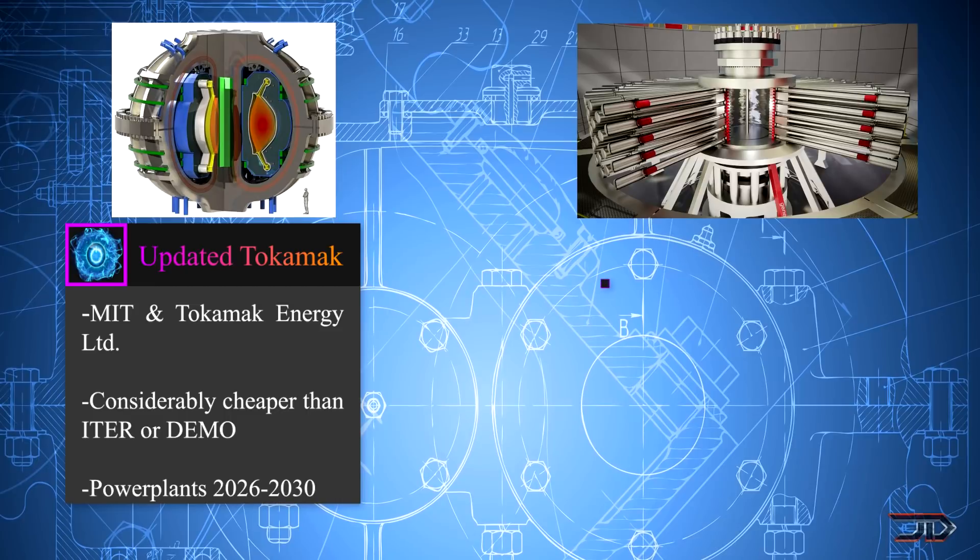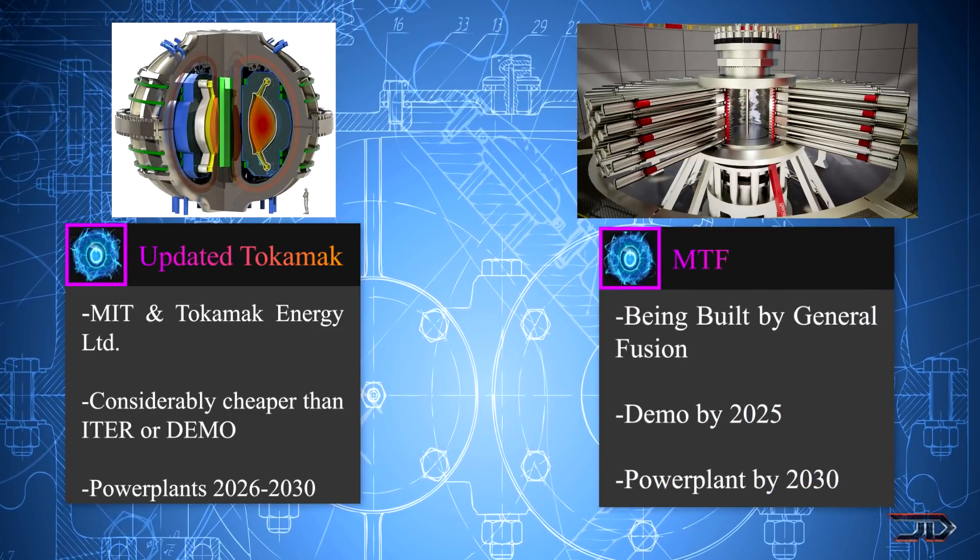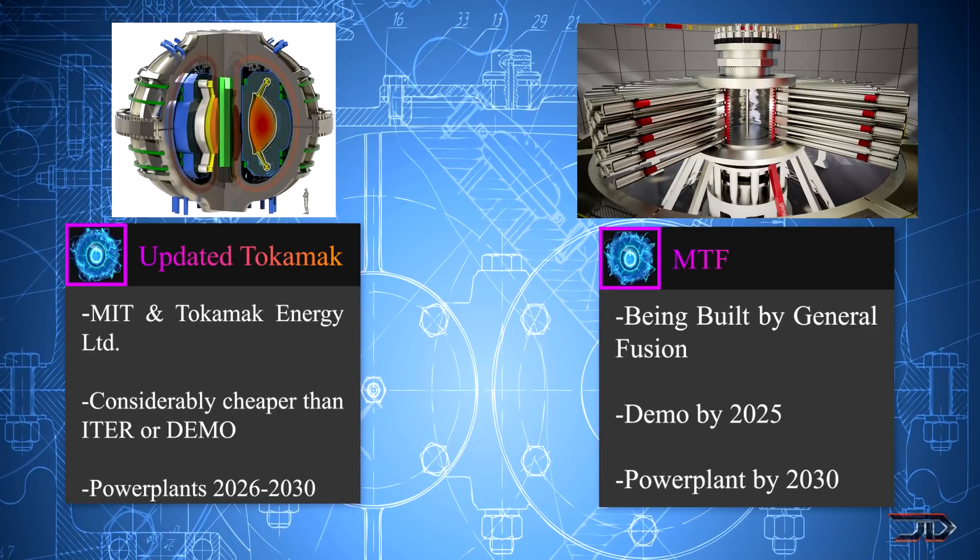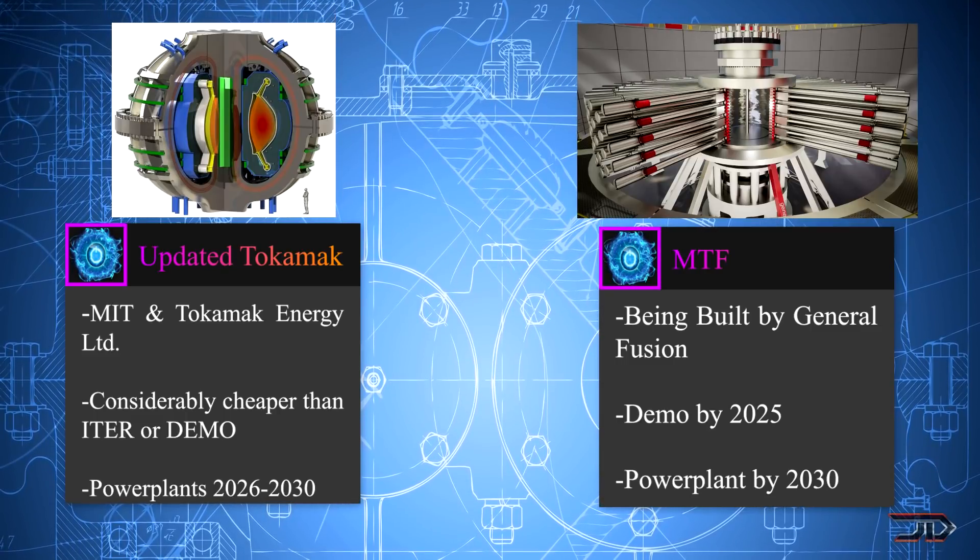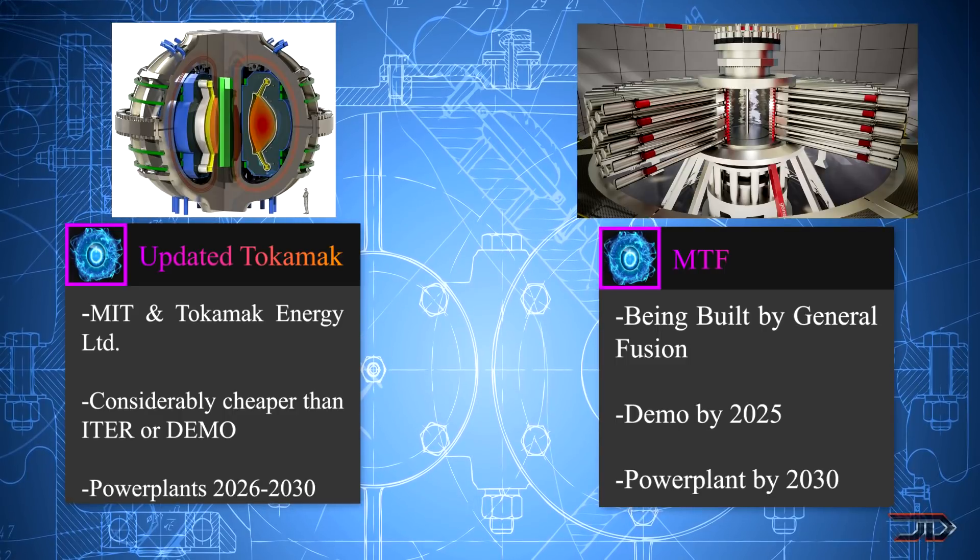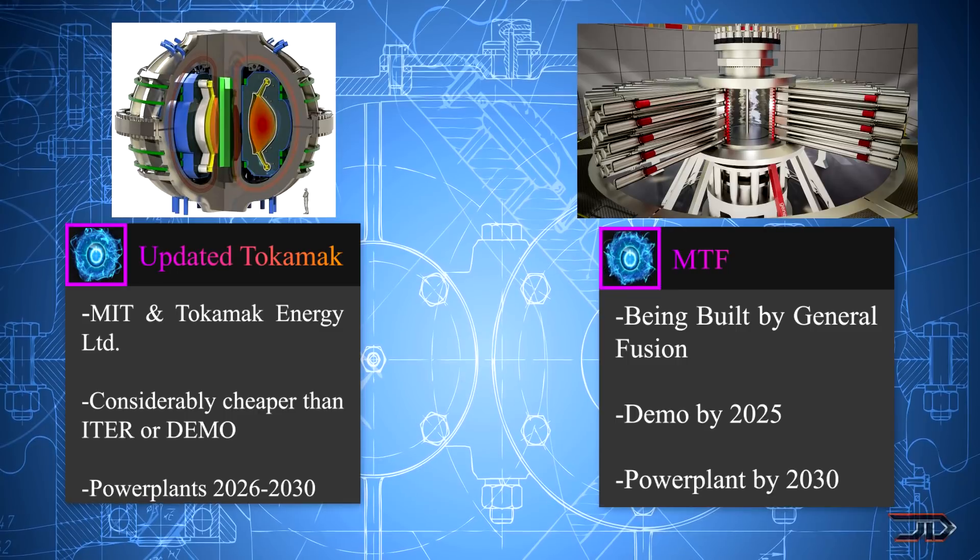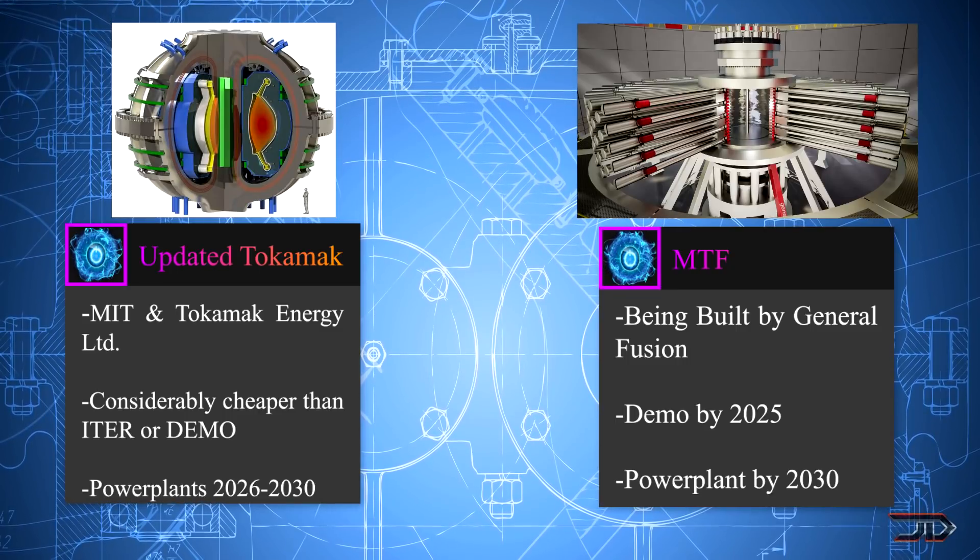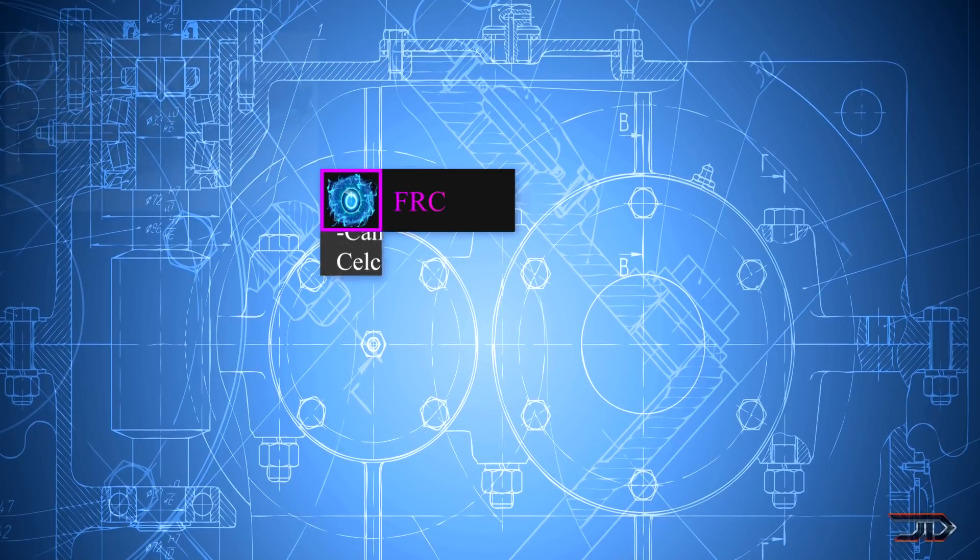We also have magnetized targeted fusion, which could be another potential method in producing power. General Fusion should have their demo plants ready by 2025, but like SPARK and ST40, this will not actually produce power to the grid. Whether or not it's actually more feasible than a conventional tokamak design with HTS magnets is still debatable, but it's going to be very interesting to see between these three companies which one actually produces the most net energy gain.